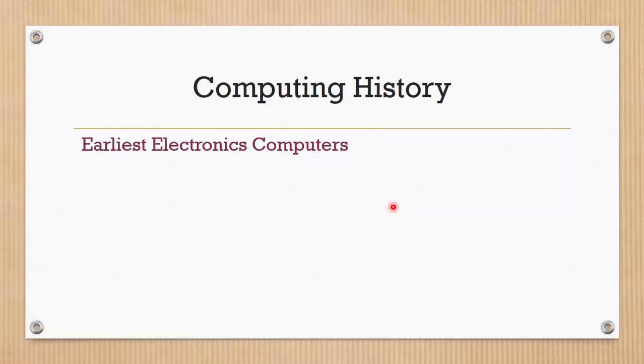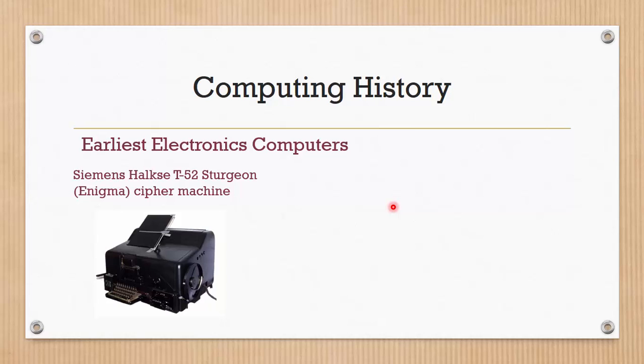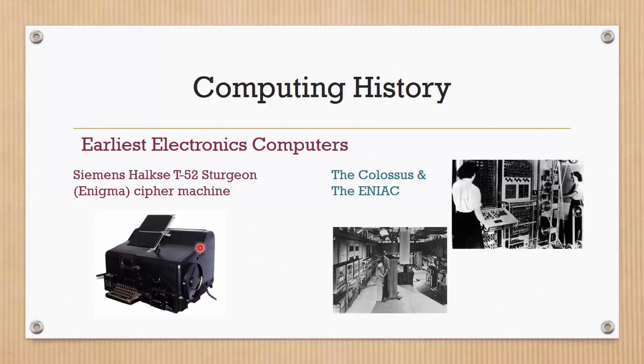Then, let us look at a few of the earliest electronics computers. This is a cipher machine called Enigma, made by Siemens. It has a keyboard here and inside is electronics. And this is a small one. But even for electronic system, the early computer system is very huge. For example, the Colossus and ENIAC here, they occupy the entire room just for the computing system.